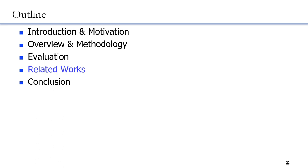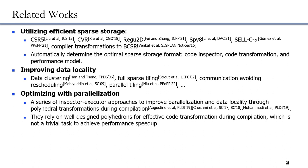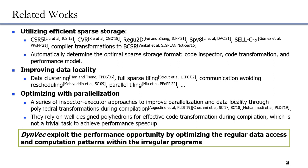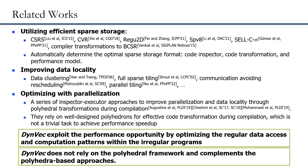Next, I will introduce some related works. There are various works to optimize SPMV for its irregular memory access, including utilizing efficient sparse storage formats, improving data locality, and optimizing vectorization. Some works rely on well-designed polyhedral tools for effective code transformation during compilation, which is not a trivial task to achieve performance gains. In sum, DEMV exploits the performance opportunity by optimizing the regular data access and computation patterns within irregular programs, and does not rely on polyhedral frameworks, thus complementing polyhedral-based approaches.